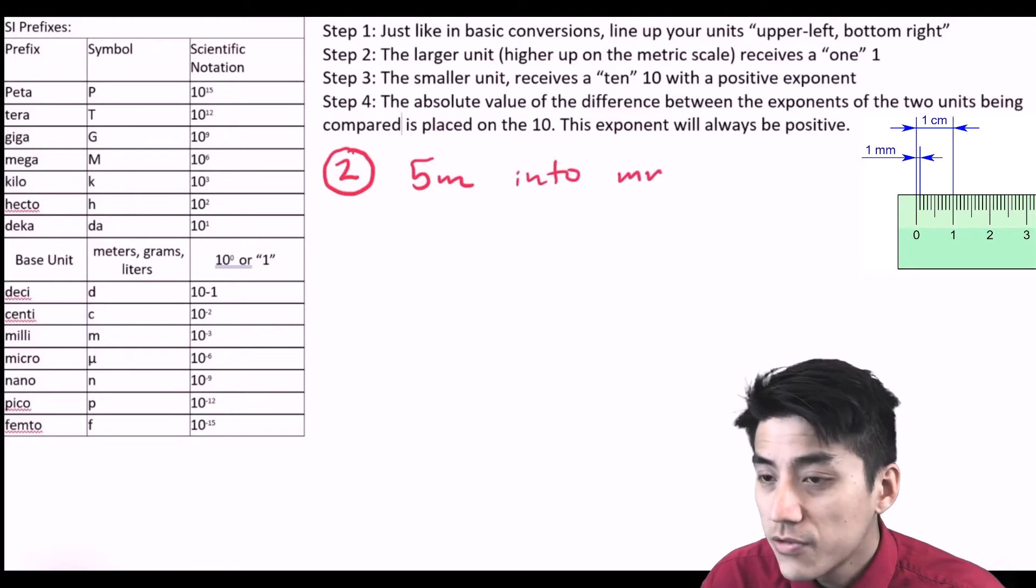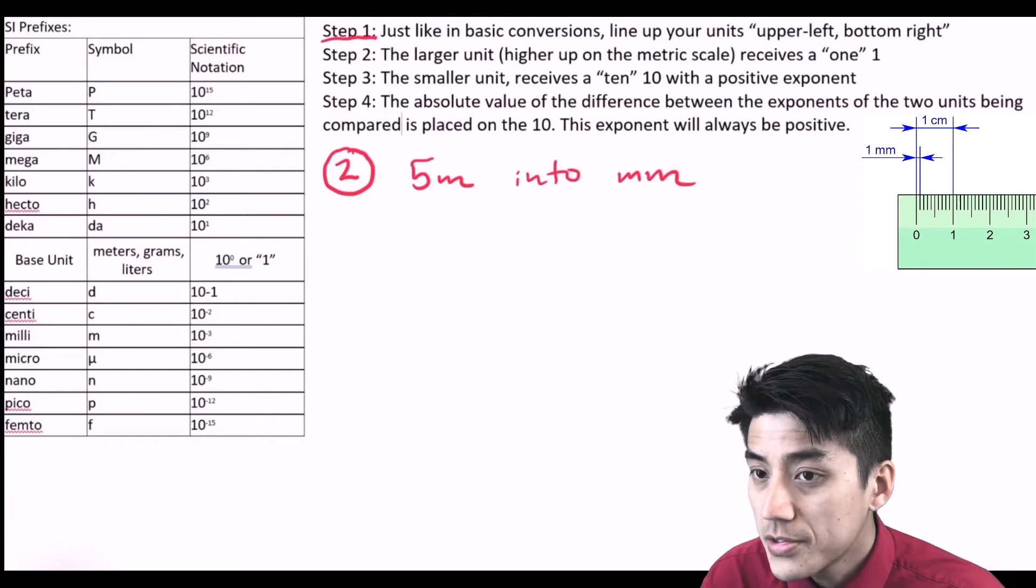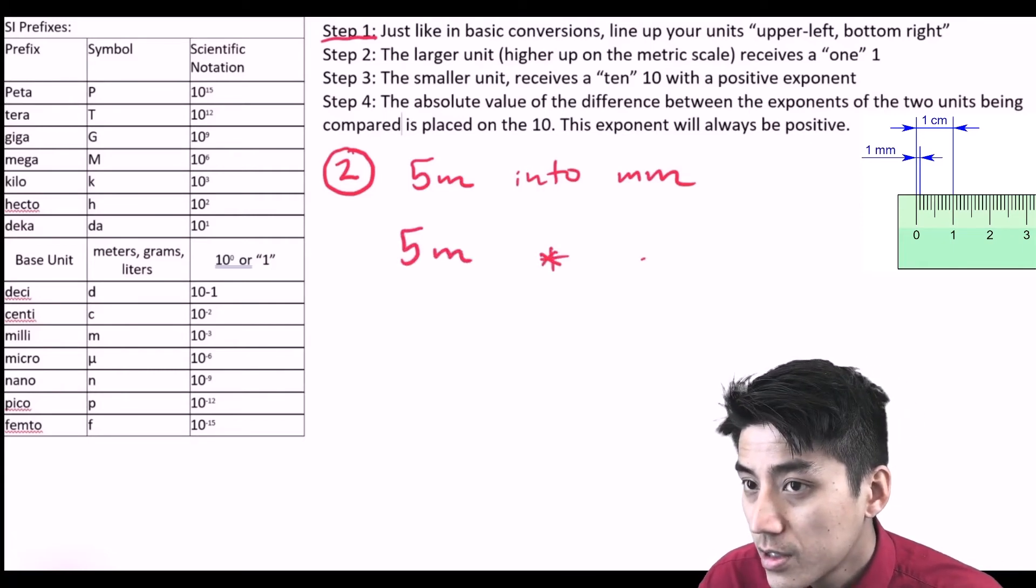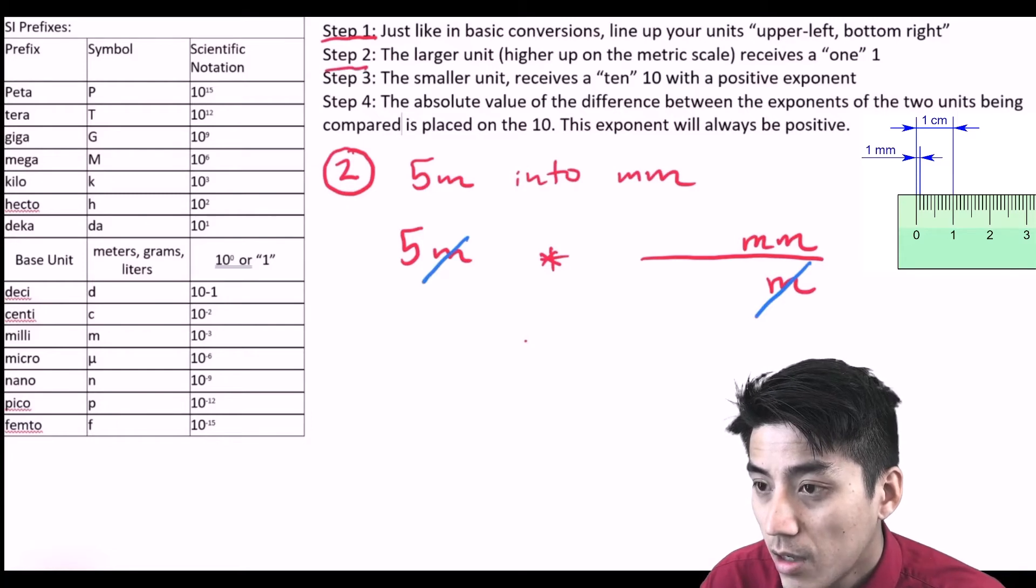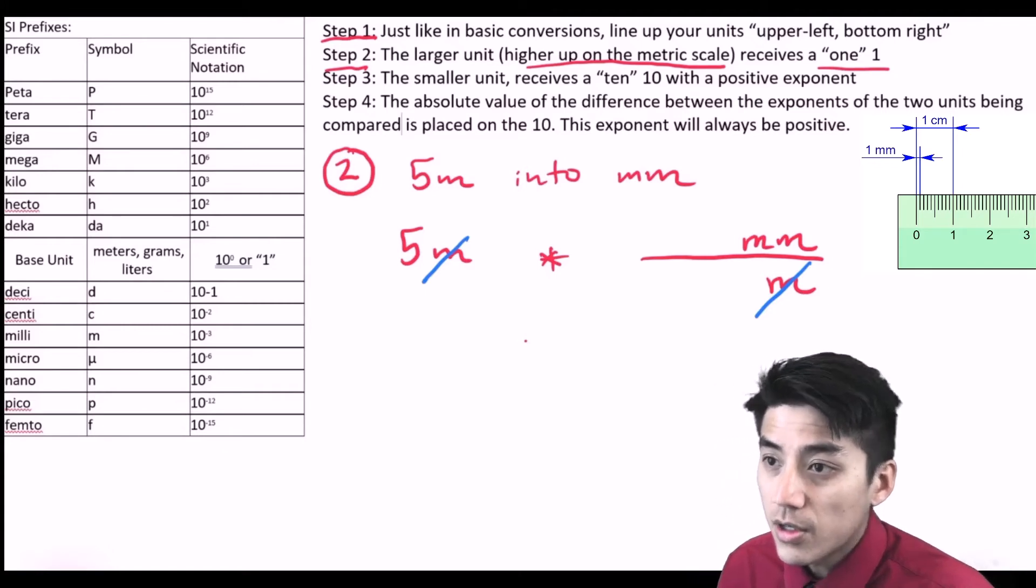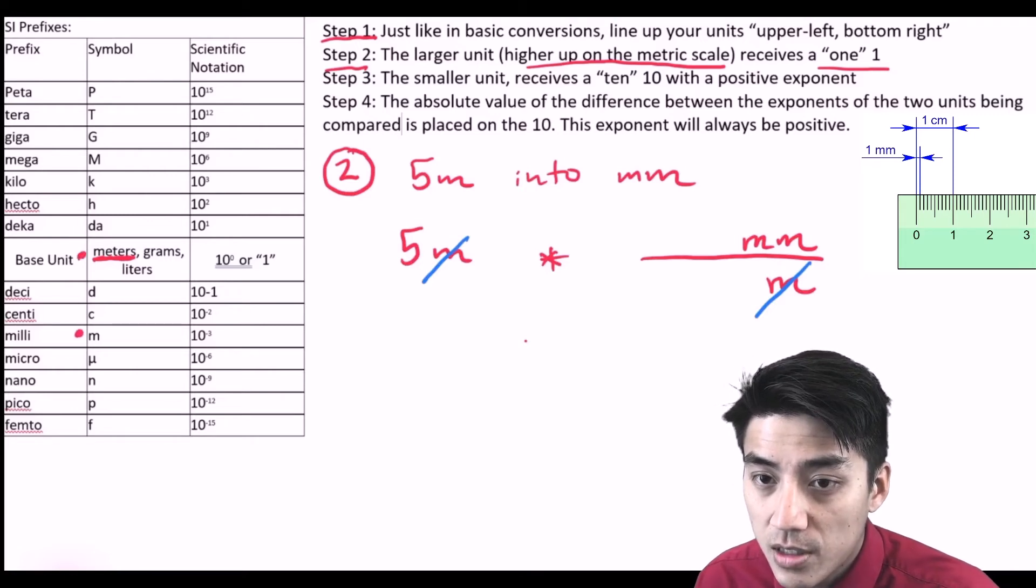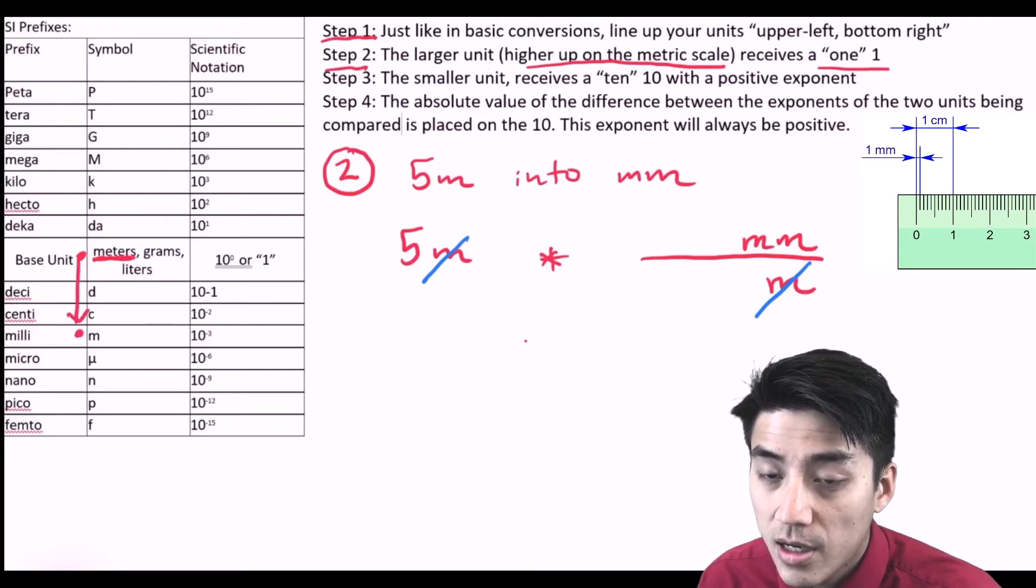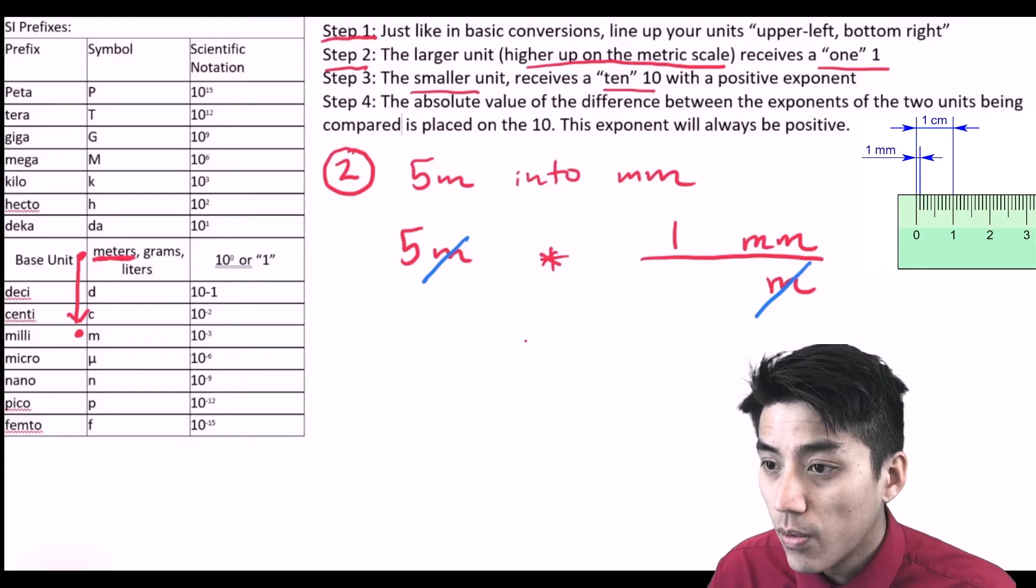Let's try problem number two. Change 5 meters into millimeters. This time we're going down, below the base unit. Let's figure out our units first. We're going to line them up upper left versus bottom right. I want meters to cancel out. I want millimeters on top, that's what I'm changing into. Step two, the larger unit receives a 1. Let's figure out what we're comparing. We're comparing meters versus millimeters. I'm going to place two dots like that. Now I just glance at it, meters is higher up. Meters should get the 1, and millimeters will get the 10.